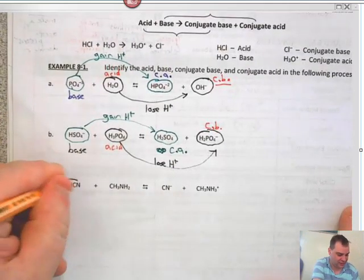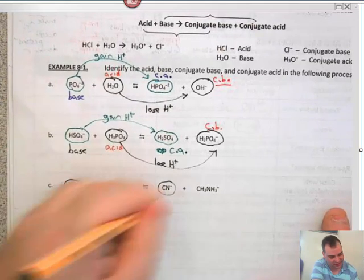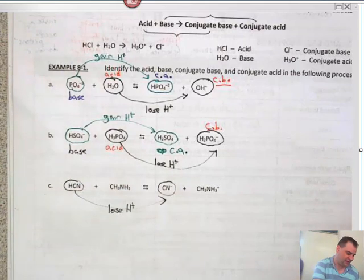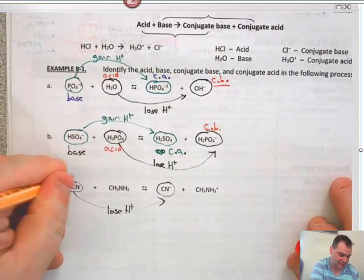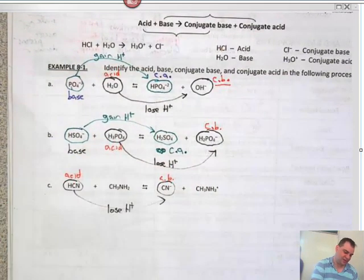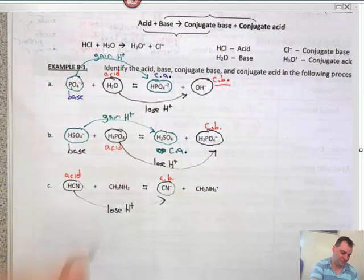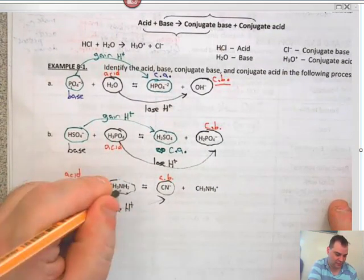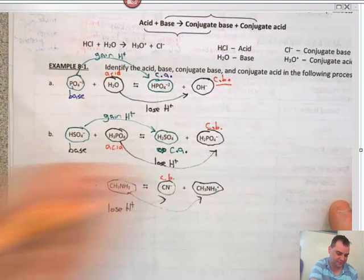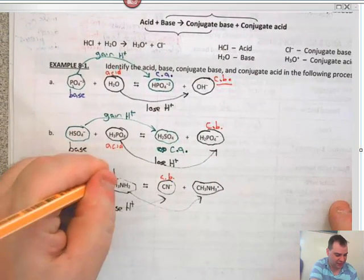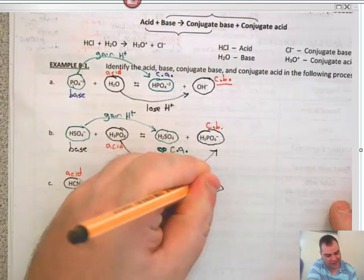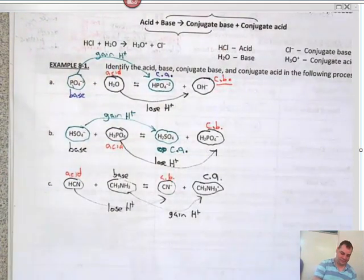We'll do this one a little faster. HCN and CN⁻ — you can see we are losing H⁺, so HCN must be an acid. Acids go to conjugate bases. That means CH₃NH₂ is going to CH₃NH₃⁺ by gaining H⁺, so CH₃NH₂ must be a base. Bases gain H⁺ to go to conjugate acids.